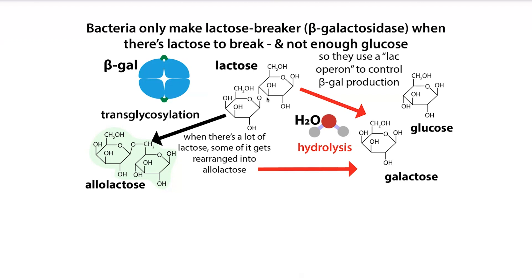Beta-gal can take the sugar molecule lactose — this disaccharide made up of a glucose molecule and a galactose molecule — and it can hydrolyze it, breaking this bond into glucose and galactose. What it can also do is transglycosylation, where it rearranges this molecule from lactose to allolactose. This allolactose can also then get broken down by hydrolysis, but if it doesn't get broken down, it can actually serve a regulatory role.